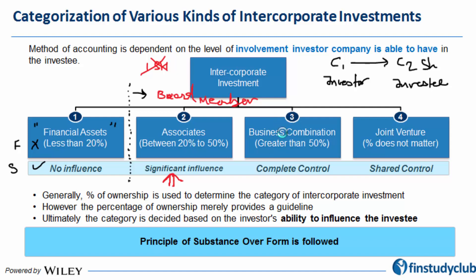The third category is a business combination — the most desired position for an investor. Here, the investor doesn't just have influence but has complete control, making the investee a subsidiary and C1 becoming the parent. The fourth case, joint venture, involves opening a separate legal entity in which two parties share dual control.